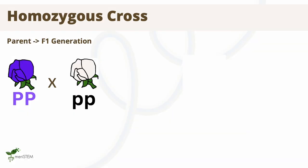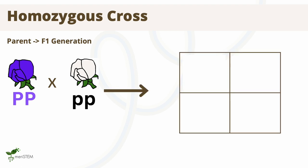First, we'll look at the parental generation from Mendel's experiment. He first crossed homozygous, or purebred, purple and white flowers. A Punnett Square is drawn as a grid. Each gamete is written along the top and the left side of the Punnett Square. In this instance, we'll place the purple gametes on the top and the white flowers' gametes on the side, but either way around is fine.